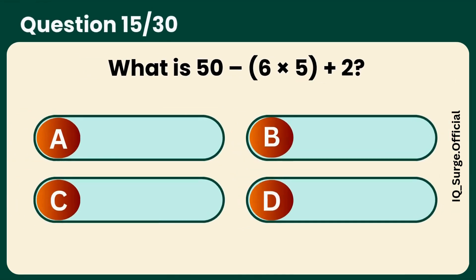What is 50 minus 6 times 5 plus 2? Answer D, 22.